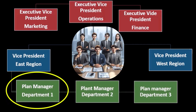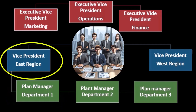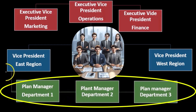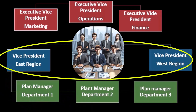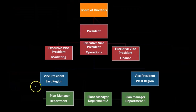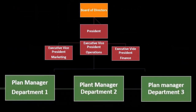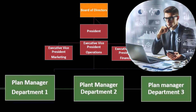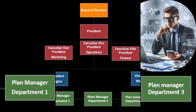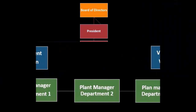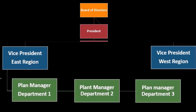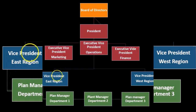As those controllable costs move up to the vice president level, there may be less detail from a department-by-department level. However, the amount of controllable costs under the umbrella of the vice president will increase. So at the department level there's more detail but fewer controllable costs, while higher up there's less detail but a broader, larger amount of controllable costs.